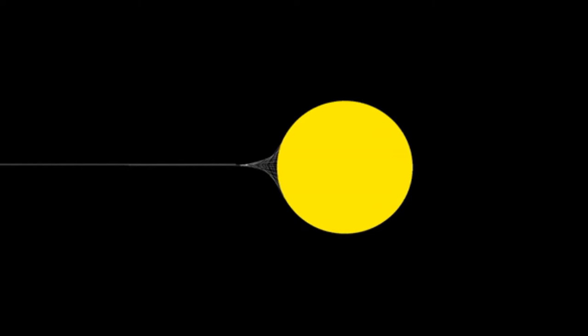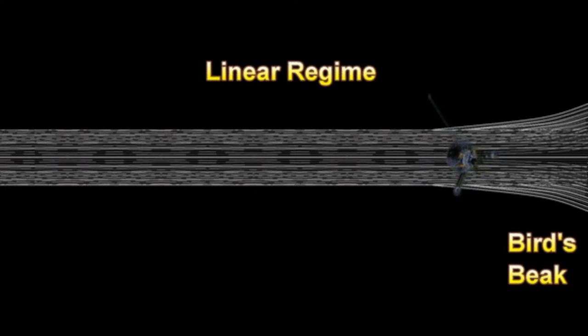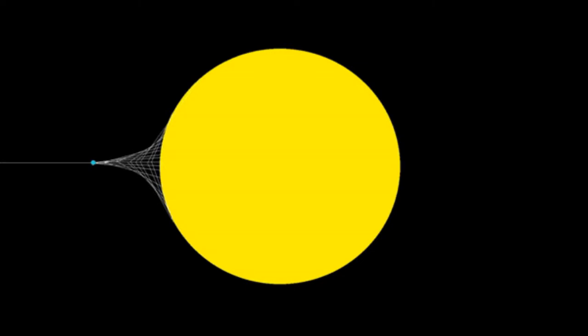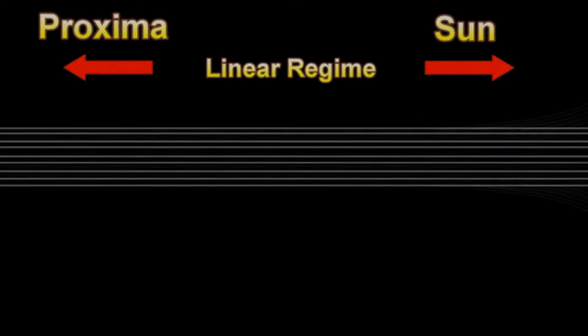You've got to understand the theory: if you're in the linear regime moving at a constant speed and going towards the sun, as soon as you hit the bird's beak you're going to be accelerated towards the sun more and more the closer you are. So the closer you are to the sun, you go faster — meaning the farther away you go from the sun, the slower you go. The linear regime is a region with no gravity.